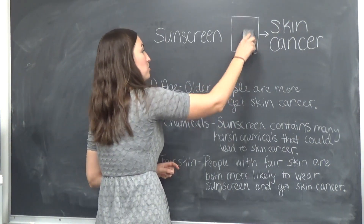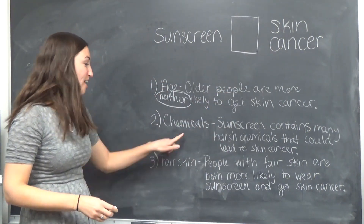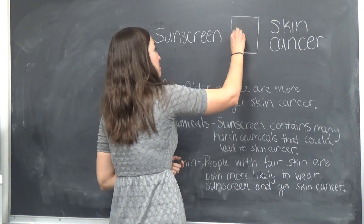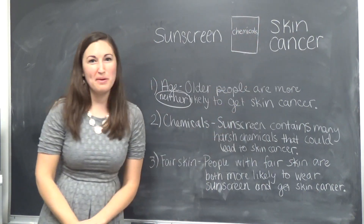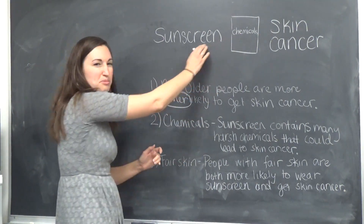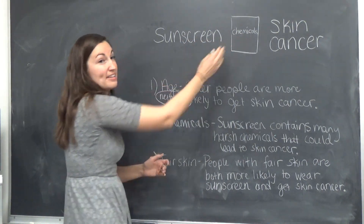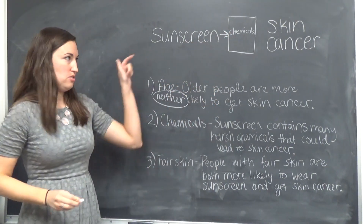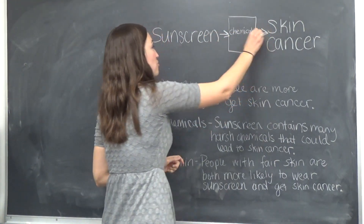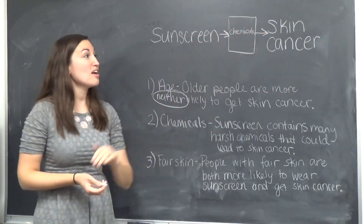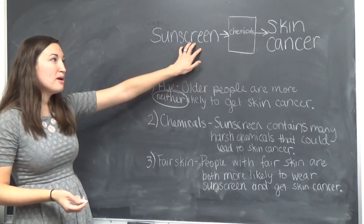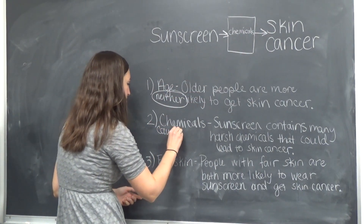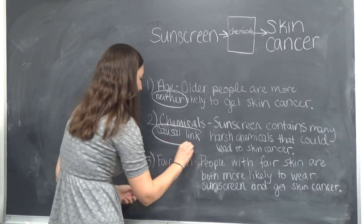The next one is chemicals. Sunscreen contains many harsh chemicals that could lead to skin cancer. So if I put chemicals in the box, I want to know: are the chemicals leading to people wearing sunscreen, or do people wear sunscreen and then get exposed to the chemicals? That's what's happening — you put on sunscreen and you're exposed to the chemicals, so the arrow goes that way. And then these chemicals are what caused you to get skin cancer. So this diagram where both arrows are pointing towards the response has to be the causal link — what about sunscreen is specifically causing the skin cancer? It's these chemicals. So chemicals would be our causal link.